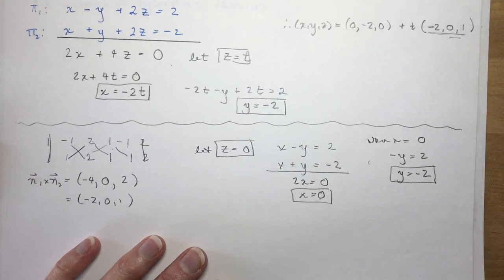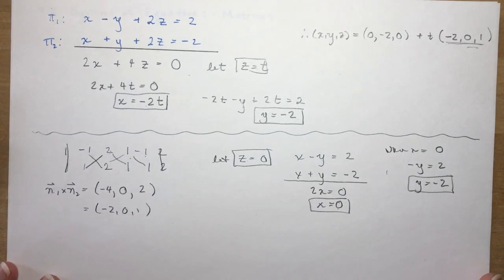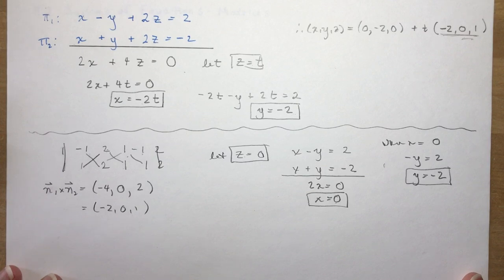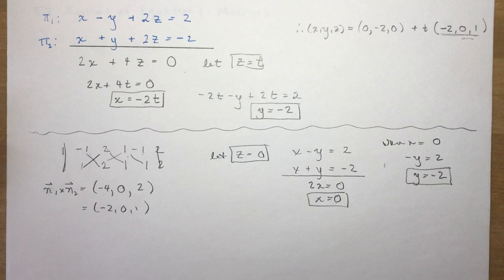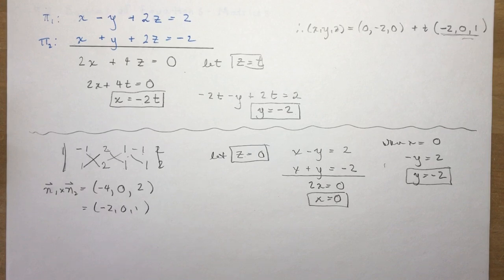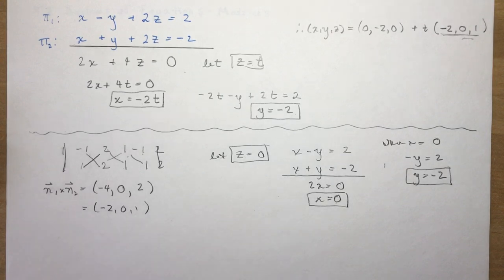Both methods give the same result. I like them both — the cross product method and the t-substitution method. I hope that helped. The next lesson will be matrices, which is how we'll solve the intersection of three planes. It's similar to section 9.2 but many teachers prefer matrices because when you get to university, that's what professors use, and you'll be ahead of your classmates. See you in the next video — have a good day!